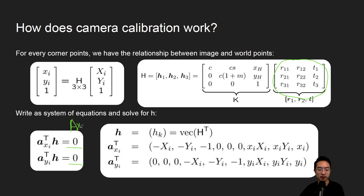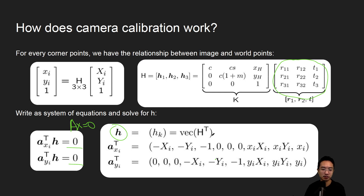We want to get our equations into the form AX equals zero, then solve for H. We also make assumptions — typically you have X, Y, Z, but if Z is on the image plane we can set Z to zero. After setting up the system of equations, we use a solver to find the actual parameters.